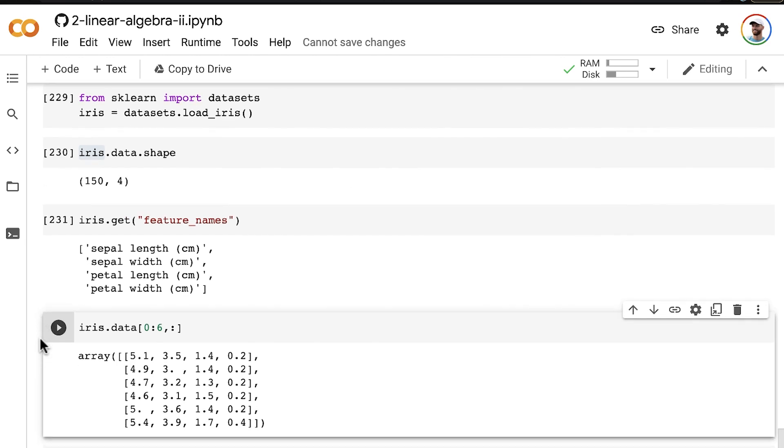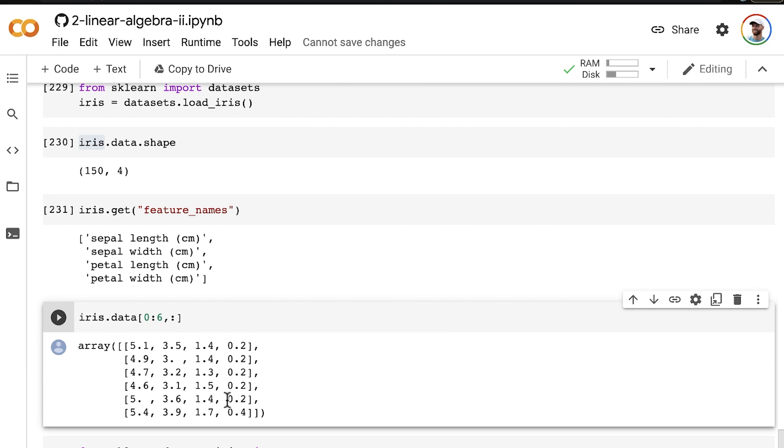So we can have a look at these data. Here are the first six rows. So for six irises, for six flowers, we have these four measurements: sepal length, sepal width, petal length, and petal width.